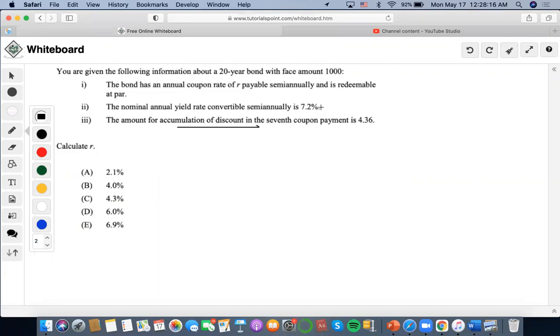The amount of accumulation of discount in the seventh coupon payment is 4.36. This seems like we have to do a bond pricing formula intertwined with subtracting two different book values to set it equal to this amount of discount so we can find the coupon rate.